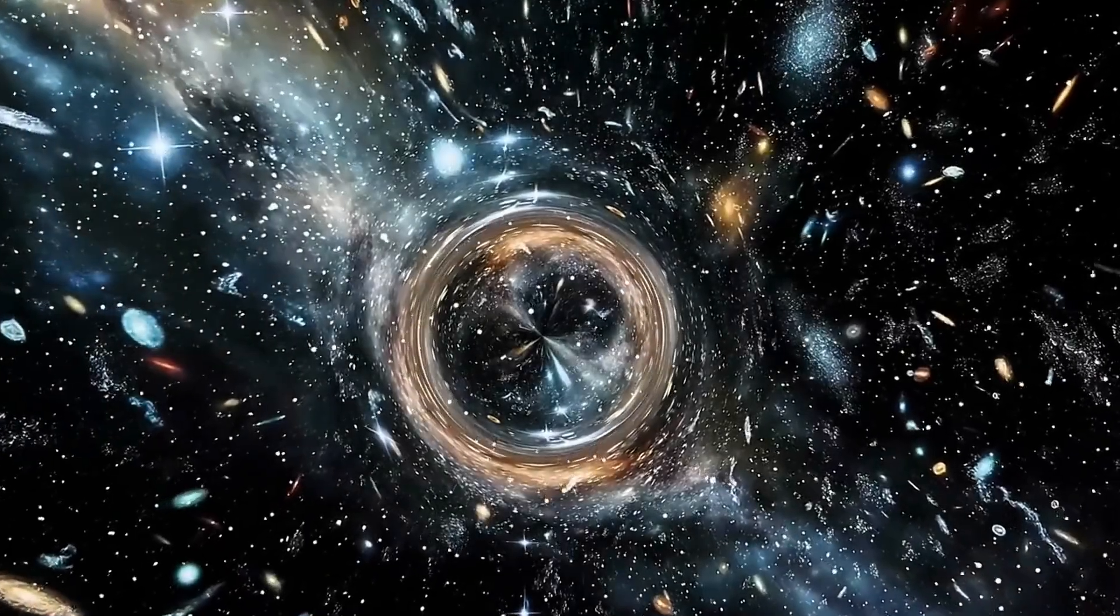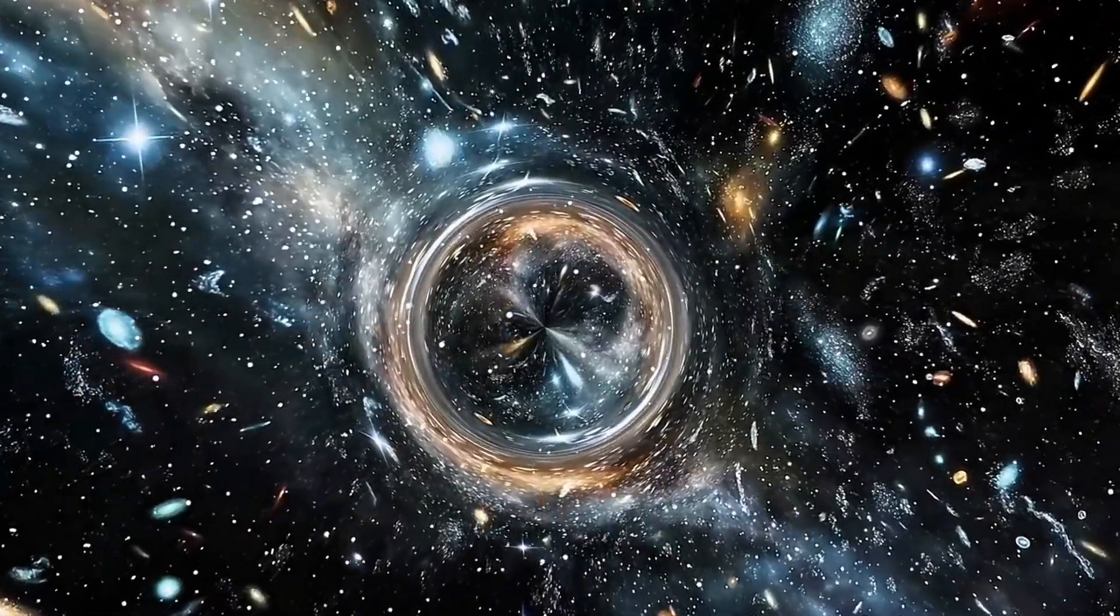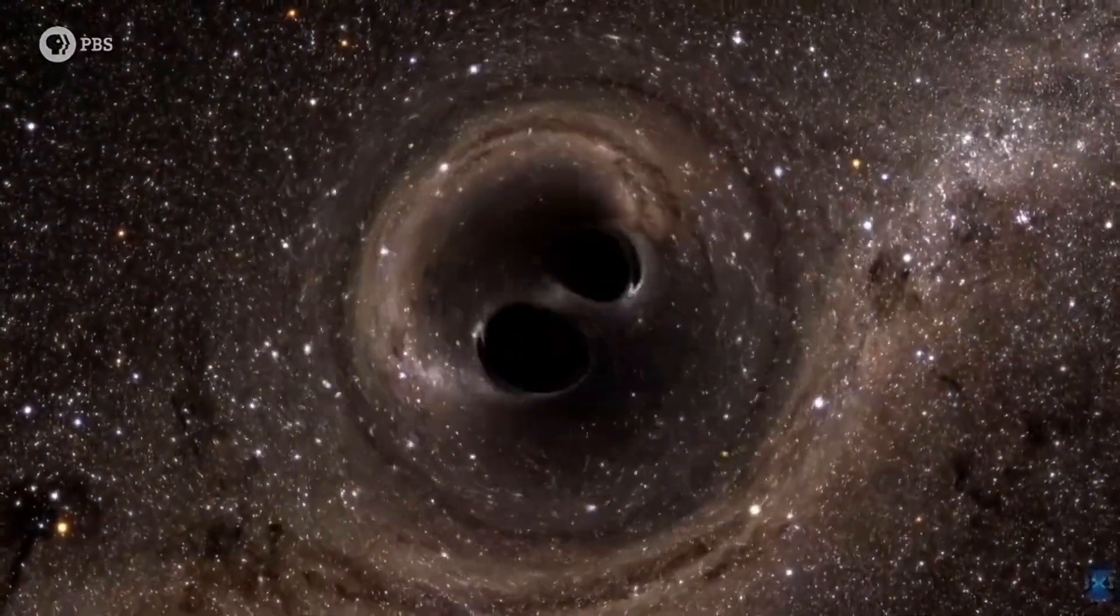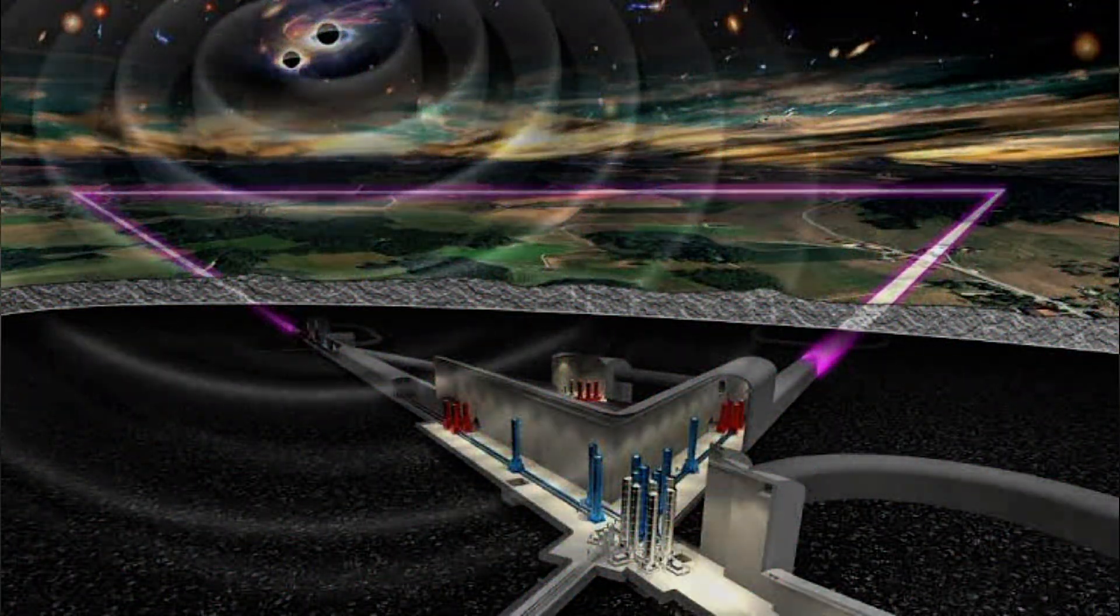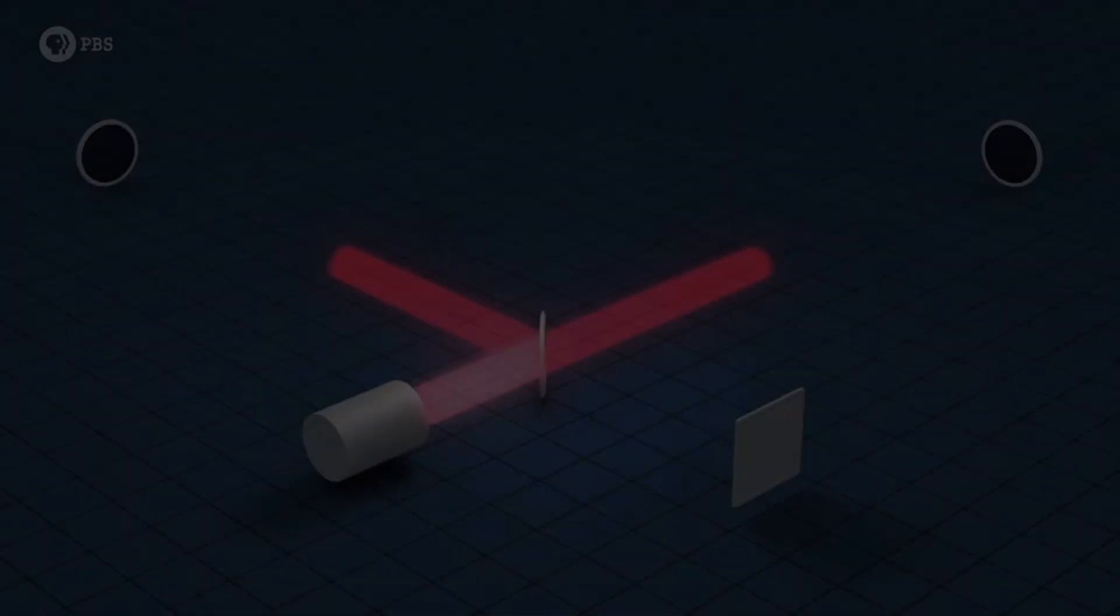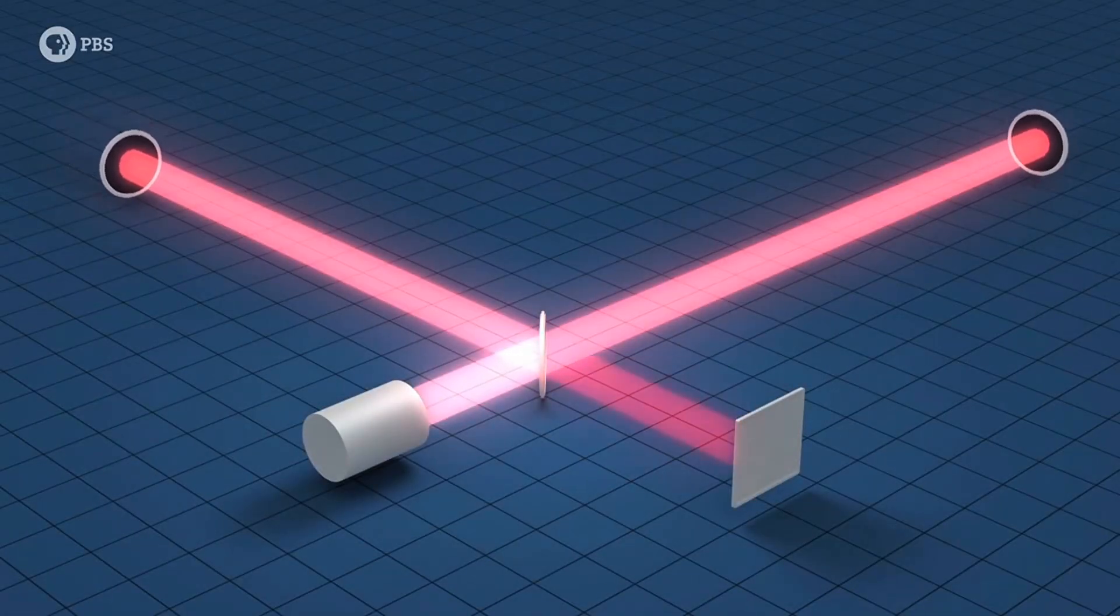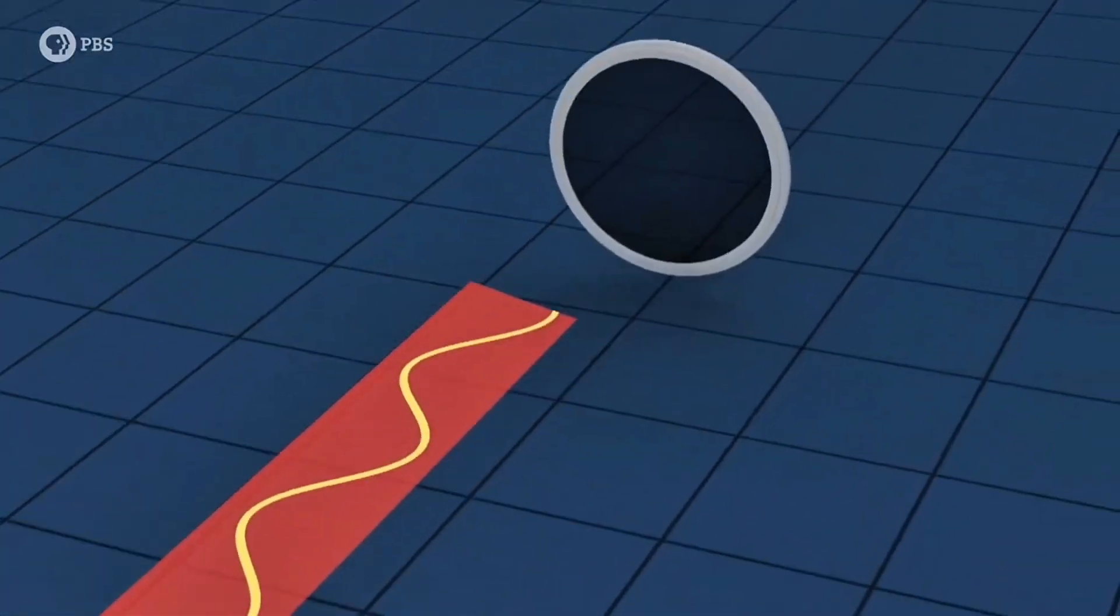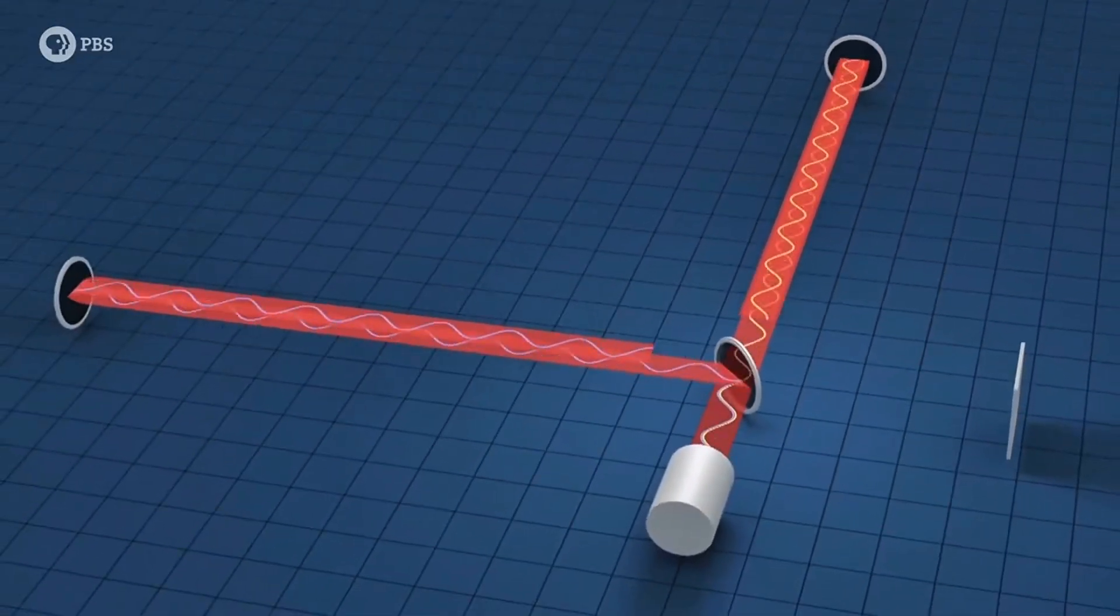Black holes are dynamic entities, growing over time by absorbing mass from their surroundings, merging with other black holes, and even influencing the structure of entire galaxies. Recent breakthroughs using gravitational wave detectors have provided a window into the dramatic collisions of black holes. These mergers send ripples through the fabric of space-time, confirming many theoretical predictions and deepening our understanding of these cosmic phenomena.